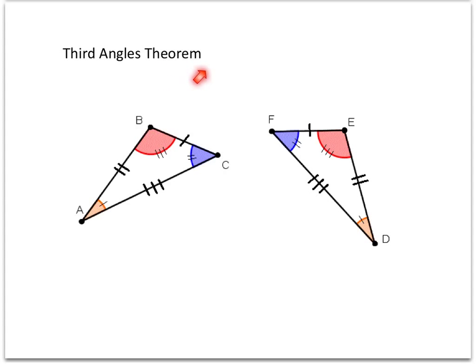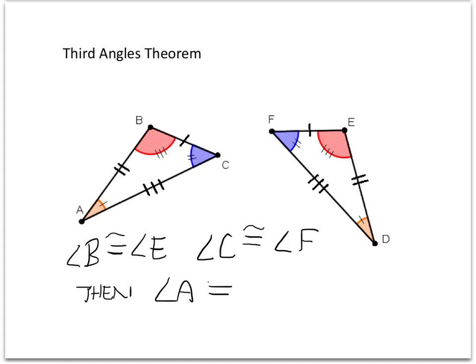The third angles theorem is pretty easy to understand. Basically, all it says is if you have two angles that are congruent to two angles in another triangle, then the third angles must also be congruent. In words, that would say angle B is congruent to angle E and angle C is congruent to angle F. Therefore, or then, angle A must be congruent to angle D. And that's all it is.